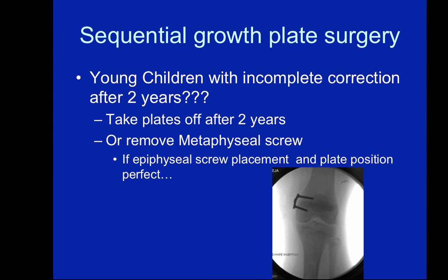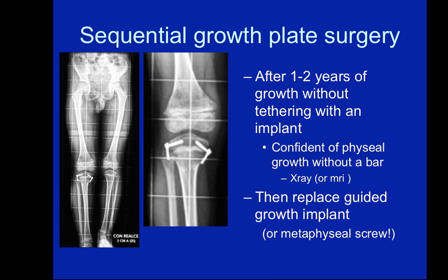What about sequential growth plate surgery? This is becoming increasingly popular in institutions around the world. If you have incomplete correction after two years in very young children, you can remove the plates or just remove the metaphyseal screw — especially if the epiphyseal screw position is perfect. After allowing one or two years of growth without tethering and confirming there's no evidence of a physeal bar, you can then replace the implant or just replace the metaphyseal screw. This is a case from Dr. Sepulveda where she removed the metaphyseal screw while using guided growth techniques for leg length discrepancy.